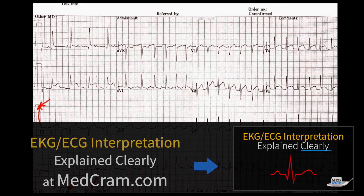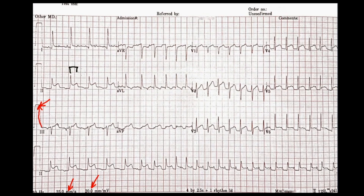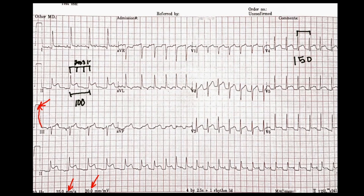Looking a bit more carefully using the box method, at the beginning you can see clearly we're dealing with approximately 3 boxes between QRS complexes. The first box is 300, the second is 150, and the third is 100. So the distance at the beginning suggests a rate of about 100. Whereas over here at the end, the number of boxes between each complex is about two boxes, giving us about 150. So we went from about 100 to about 150, and there may be an irregular rhythm.